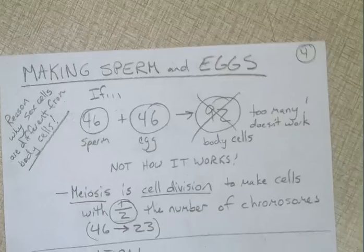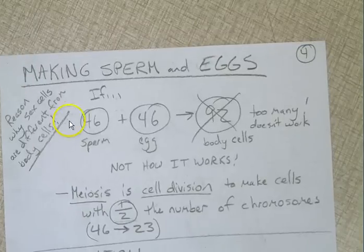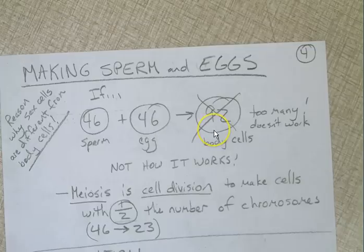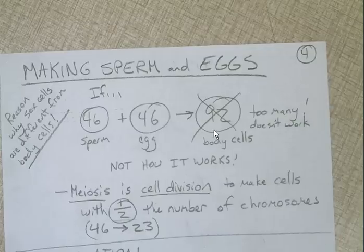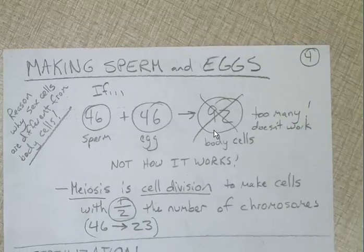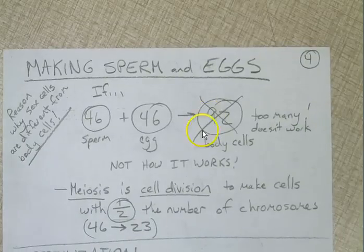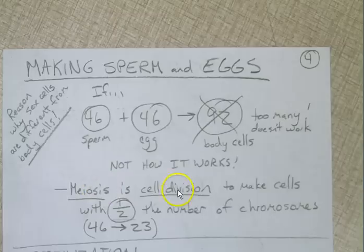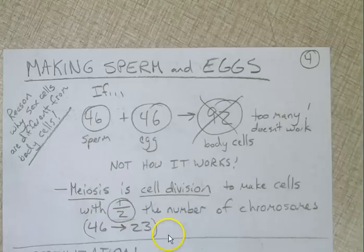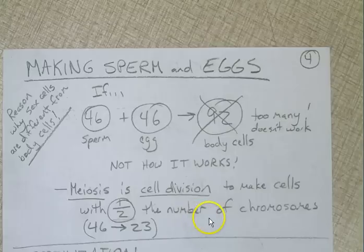Making sperm and egg — this is the reason why sex cells are different from our body cells. If sperm had 46 chromosomes and egg had 46 chromosomes, we'd have 92 chromosomes in our body cells, and our cells would not be able to survive with that. Meiosis is cell division to make cells with half the number of chromosomes, going from 46 to 23. Remember, that's different from mitosis, which produces exact copies, starting with 46 chromosomes and ending with 46 chromosomes.